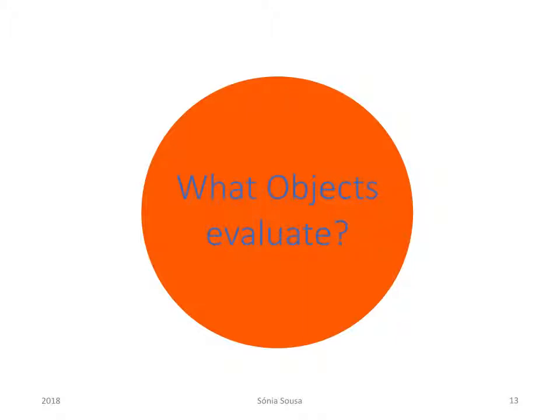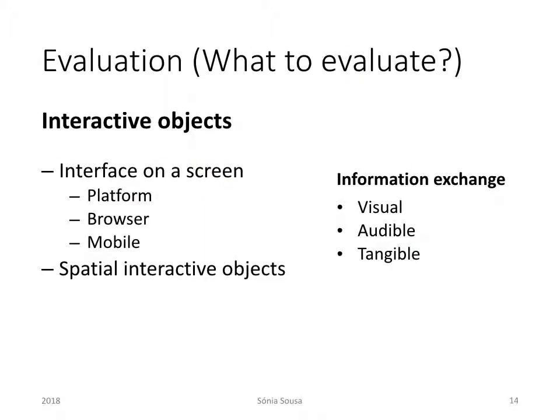What are the objects that we can evaluate? An object should be seen as a set of interactions, so they are called interactive objects. These interactive objects can be provided on a screen base, like a platform, a browser, or a mobile interface. They can also provide visual, audible, and tangible interactions.